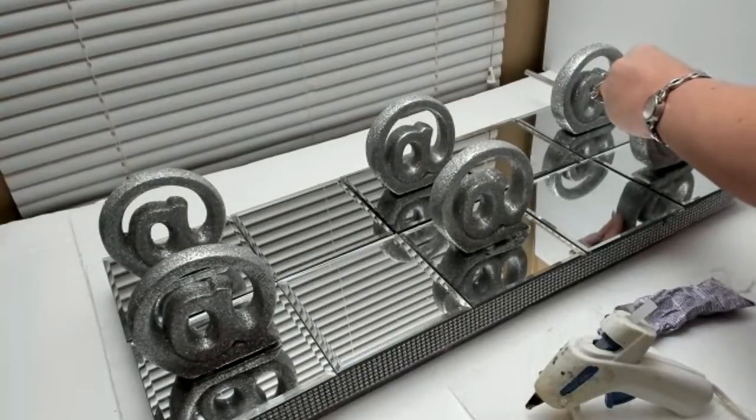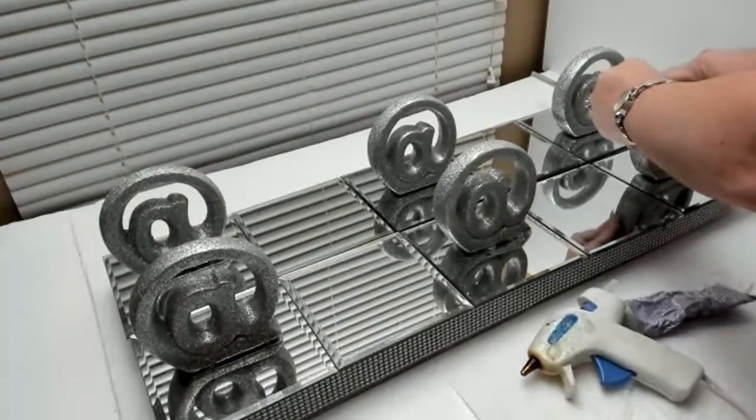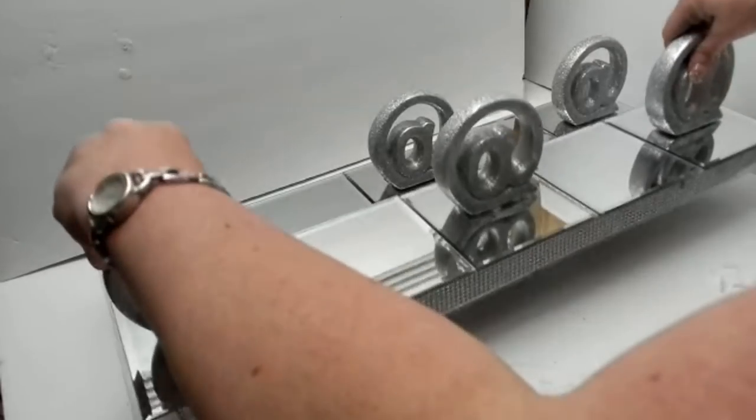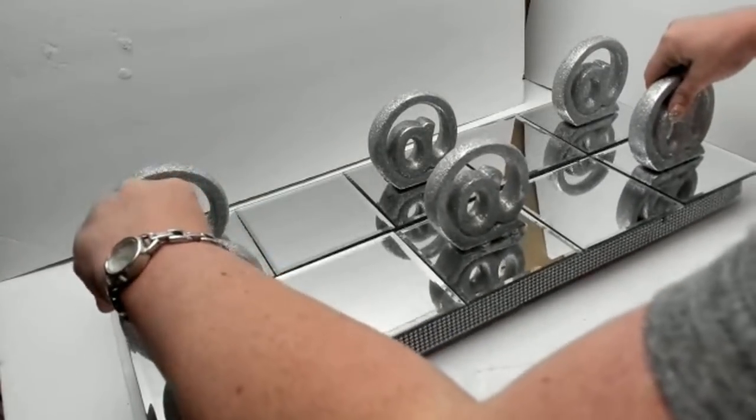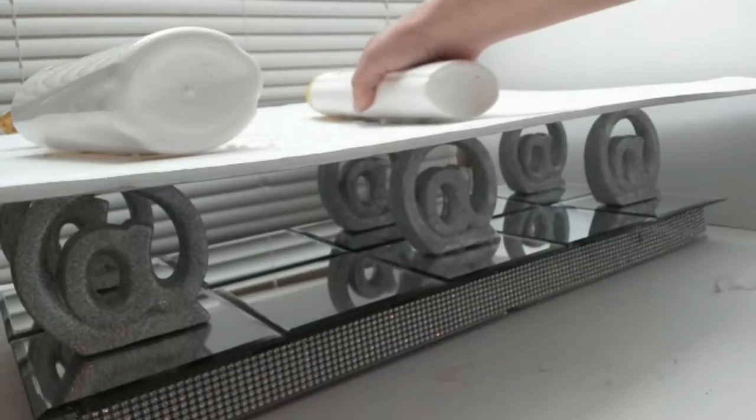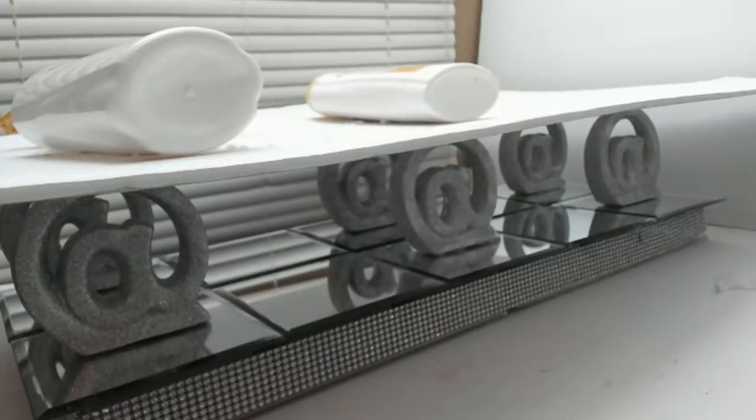Now I'm done for the night so I take a piece of foam board and I set it on top of the at signs and I add some shampoo and conditioner bottles for some weight. This gives the epoxy time to sit up and cure and completely dry before I hang it on the wall.